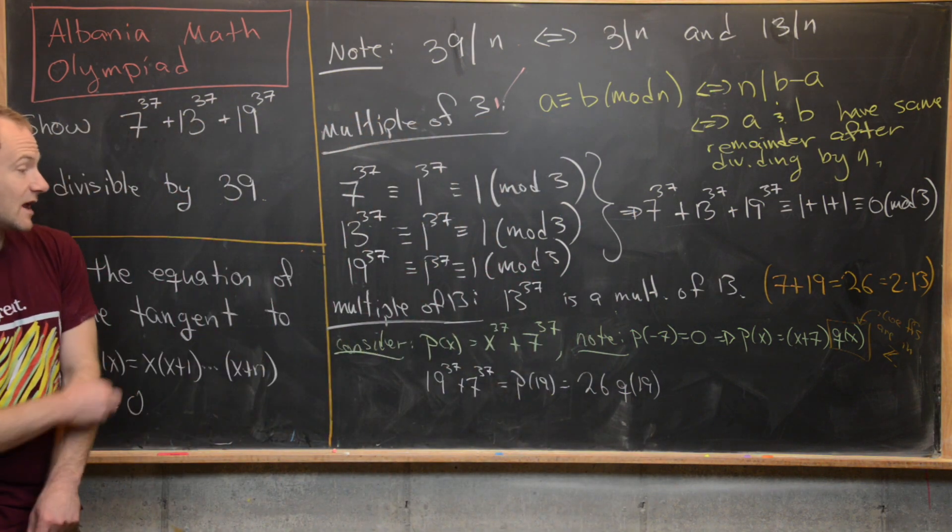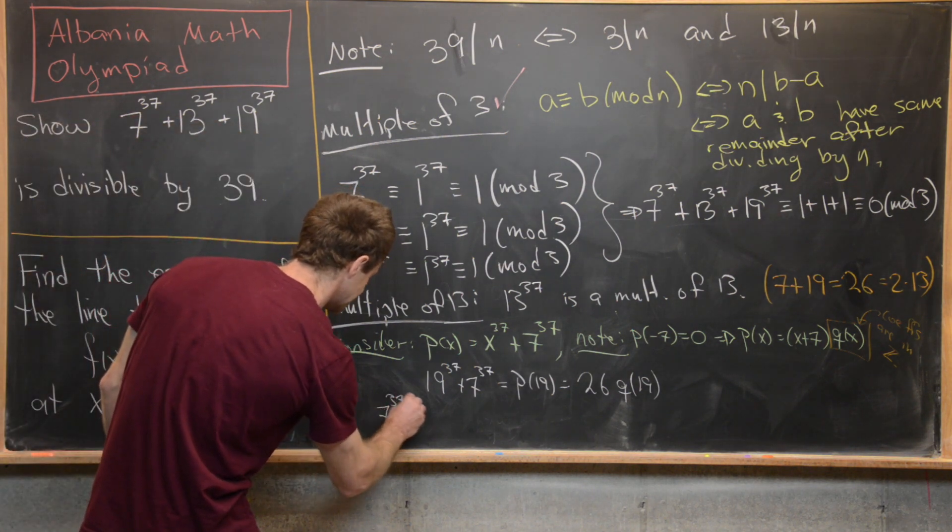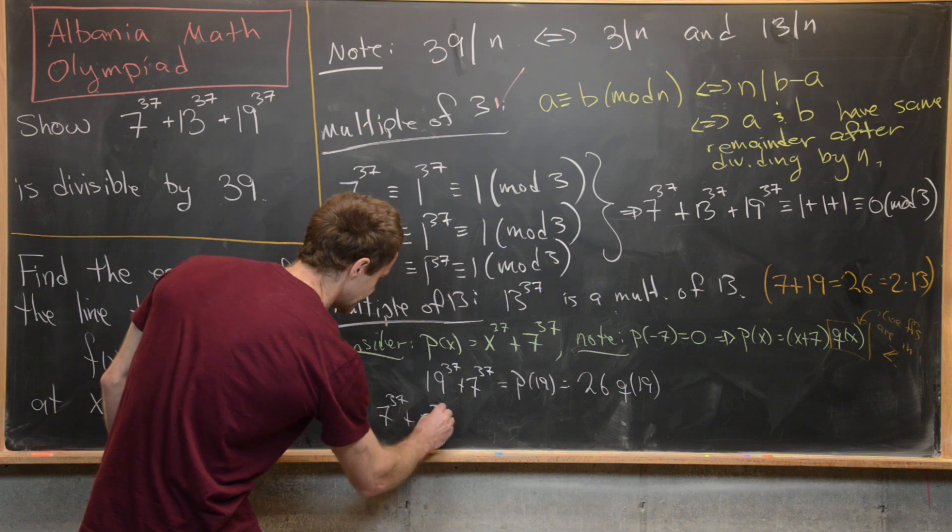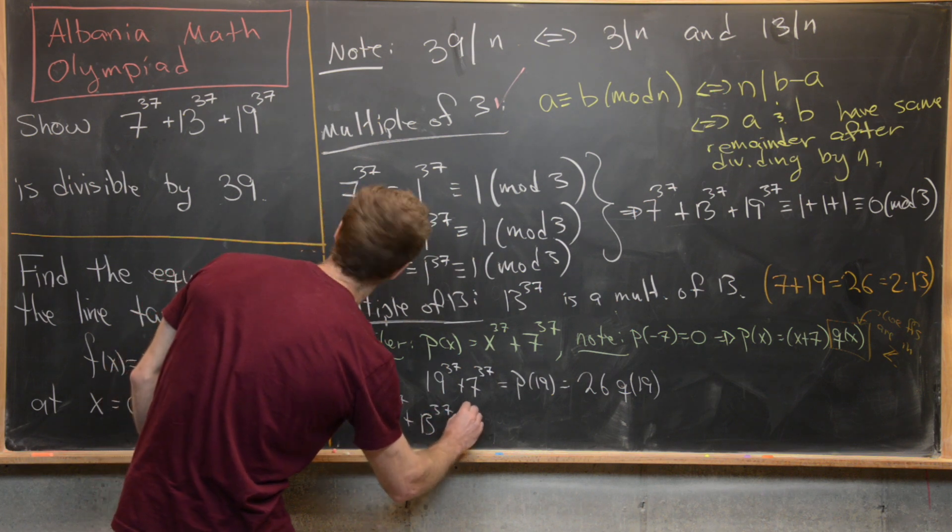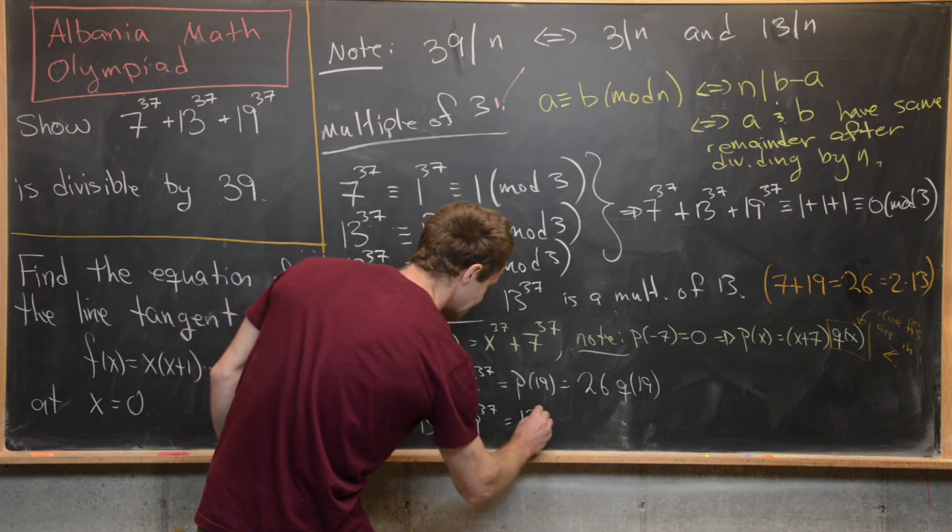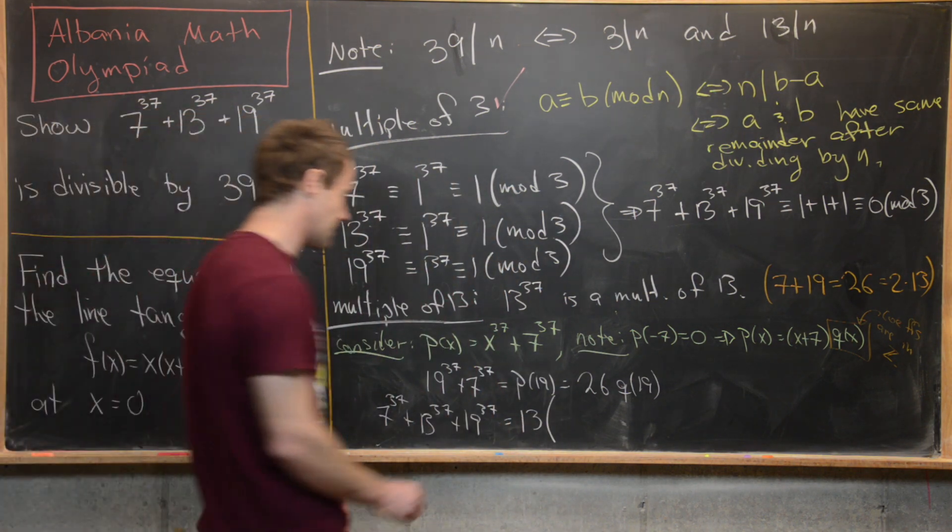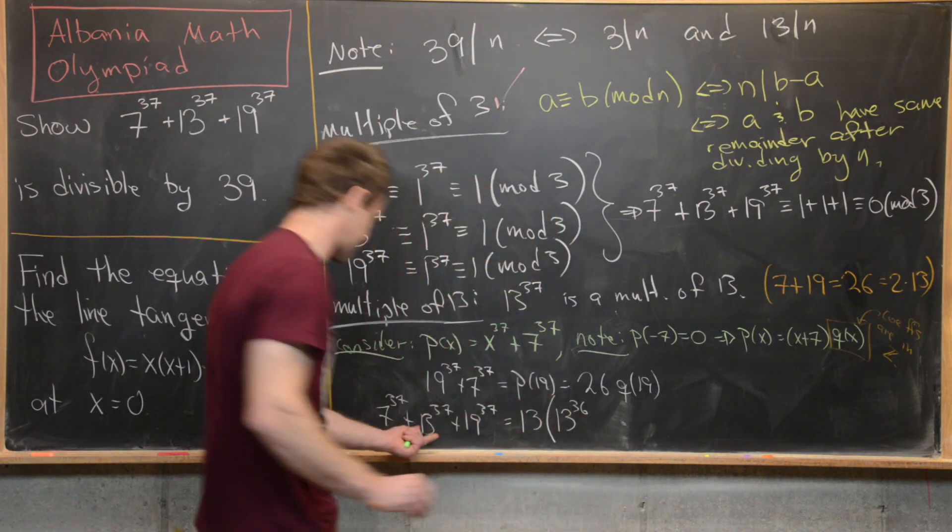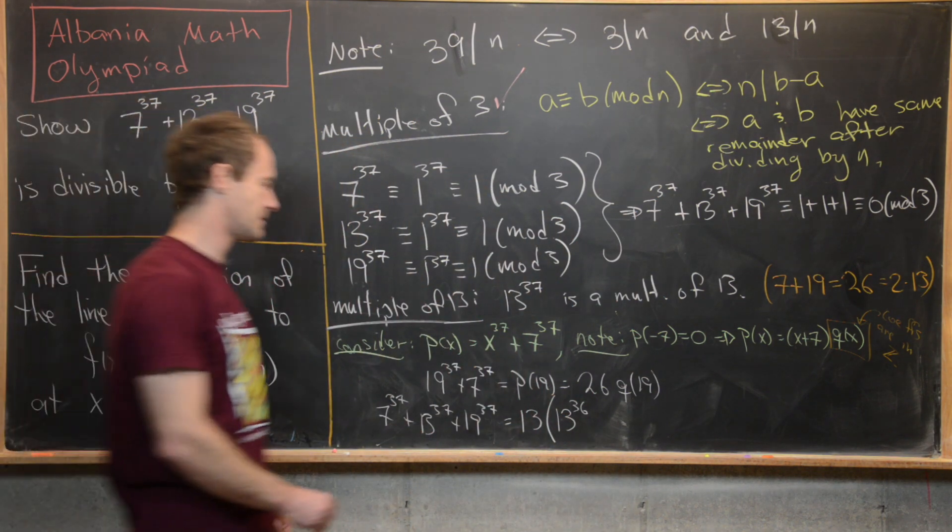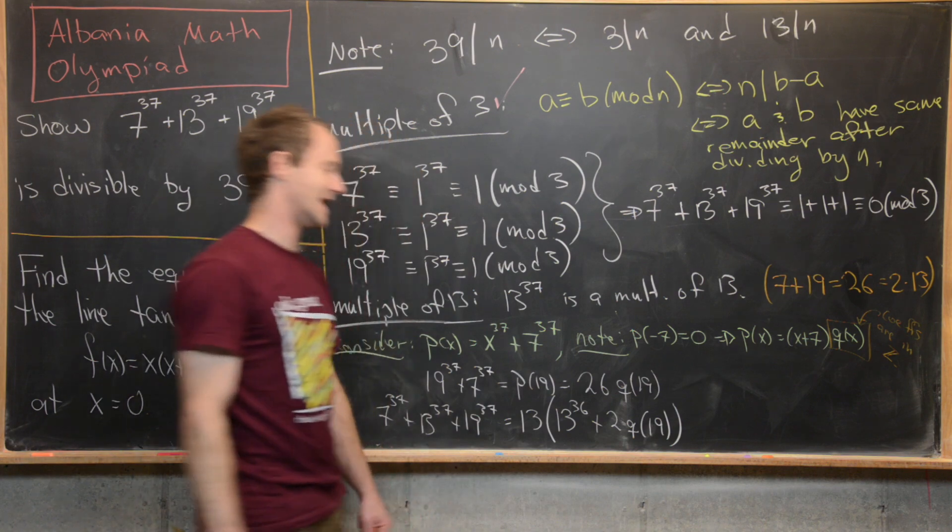But that allows us to take our whole object up here, which is 7^37 + 13^37 + 19^37 and rewrite it as 13. I'm going to factor 13 out of the whole thing. And then I have 13^36 that comes from this middle term plus 2 times this polynomial q evaluated at 19.